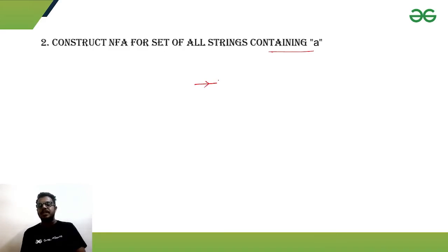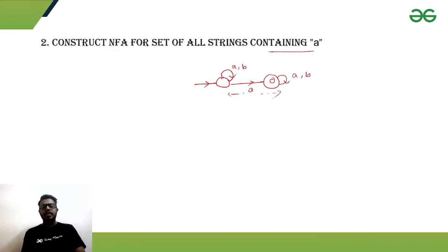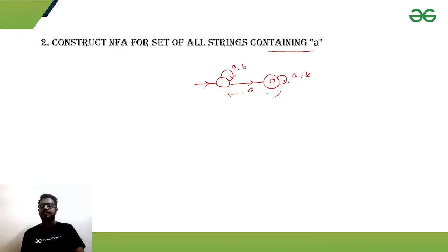The second example: construct an NFA for the set of all strings containing 'a'. This is very simple — before 'a', anything can come, and after 'a', anything can come. For NFA this is a straightforward solution, but for DFA you need to think more carefully because from the initial state given 'a', it is ambiguous whether you stay in the initial state or go to the final state.